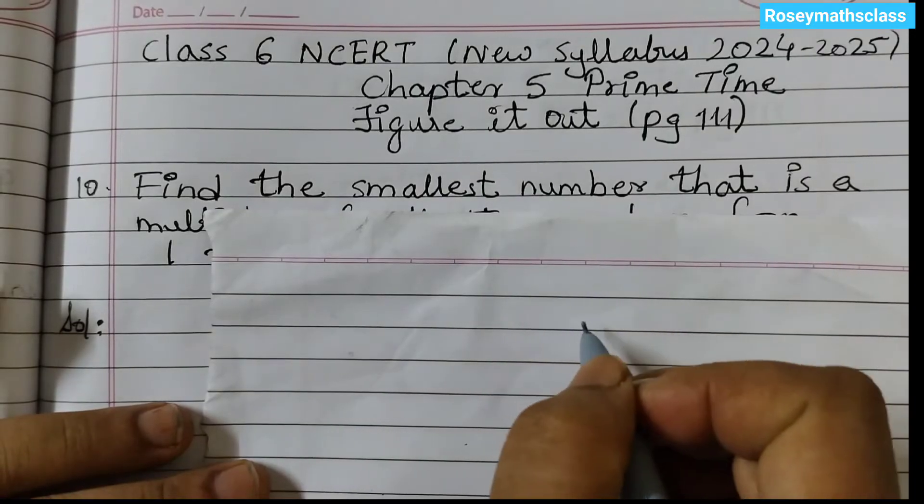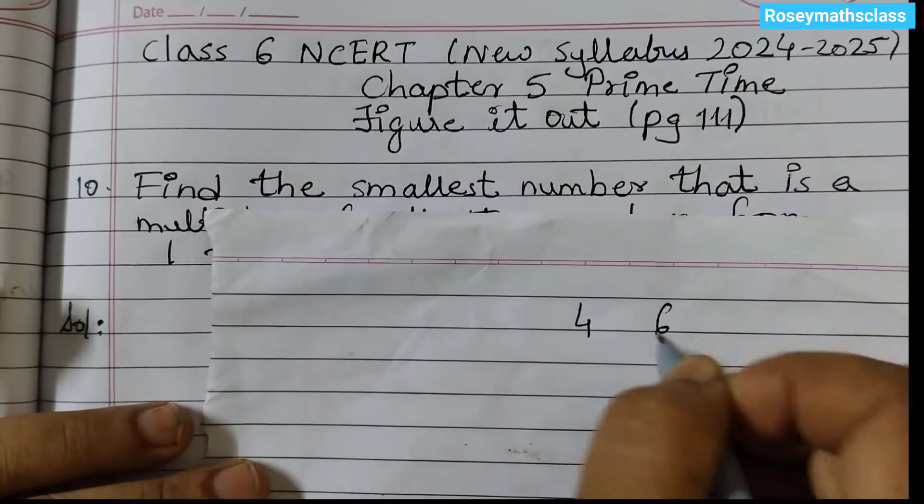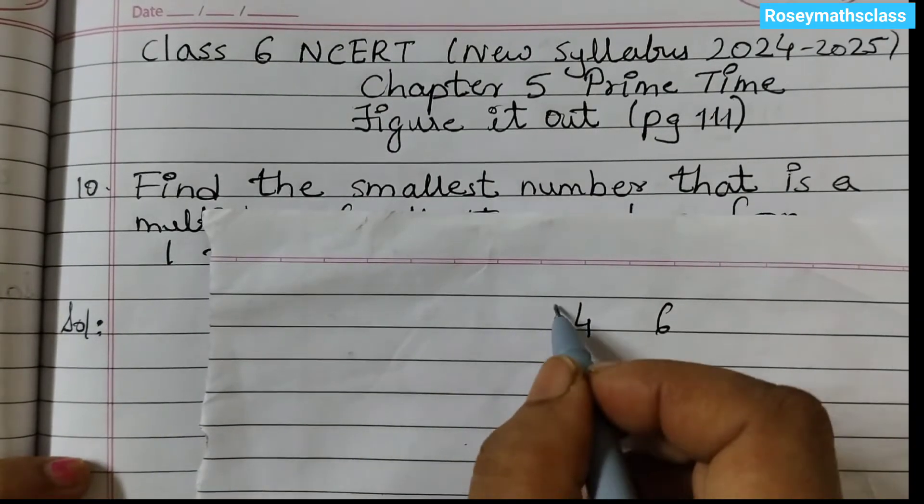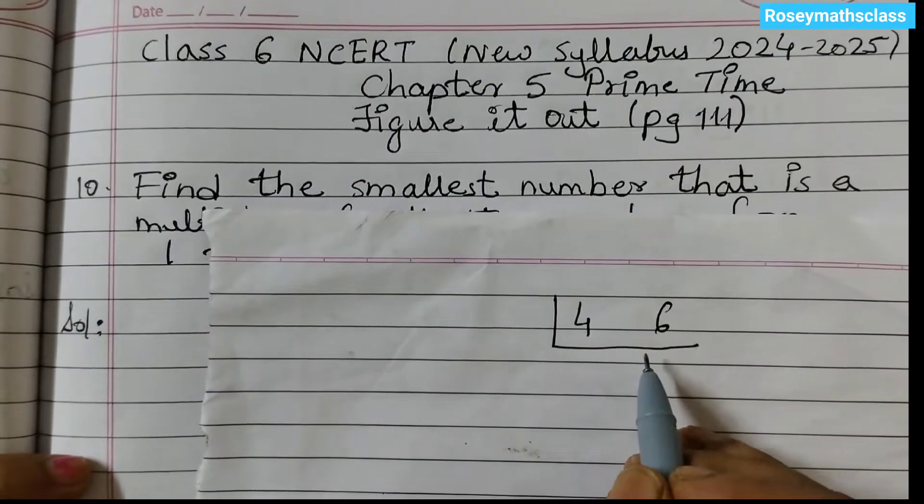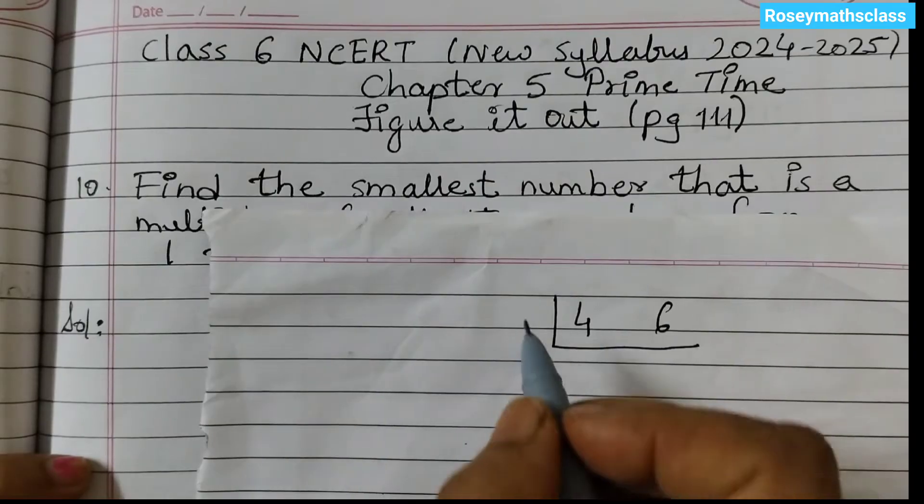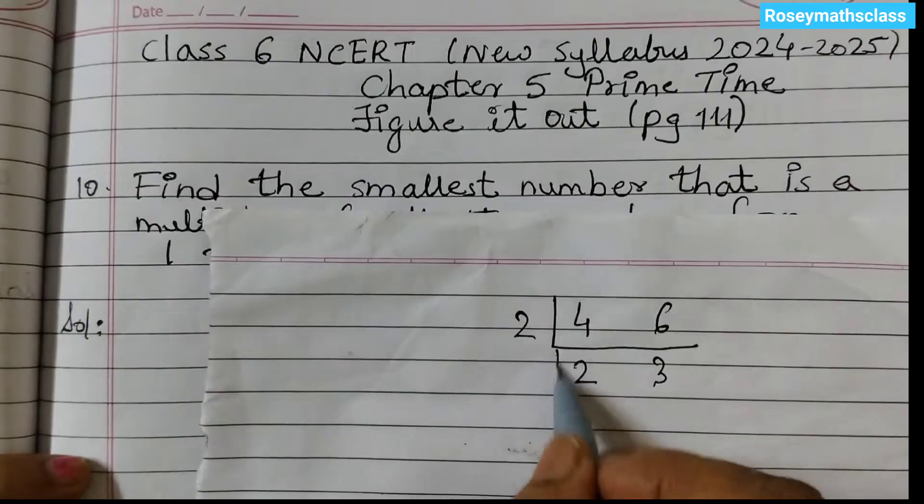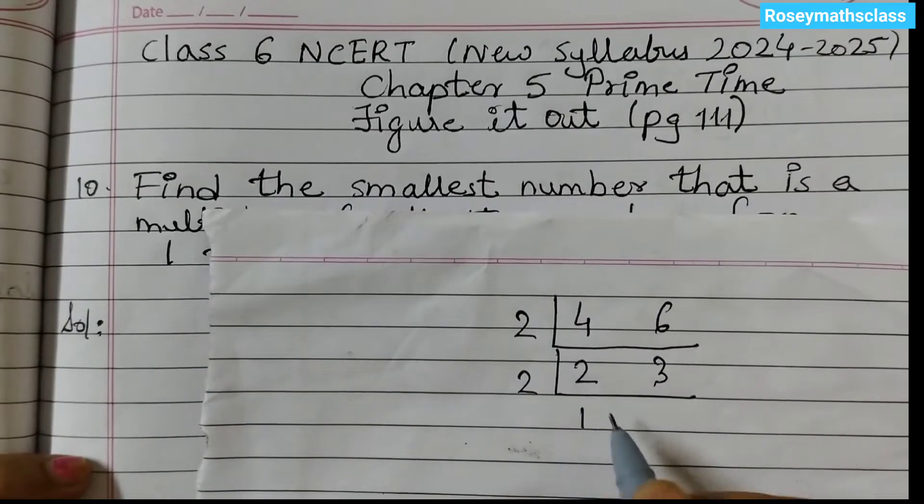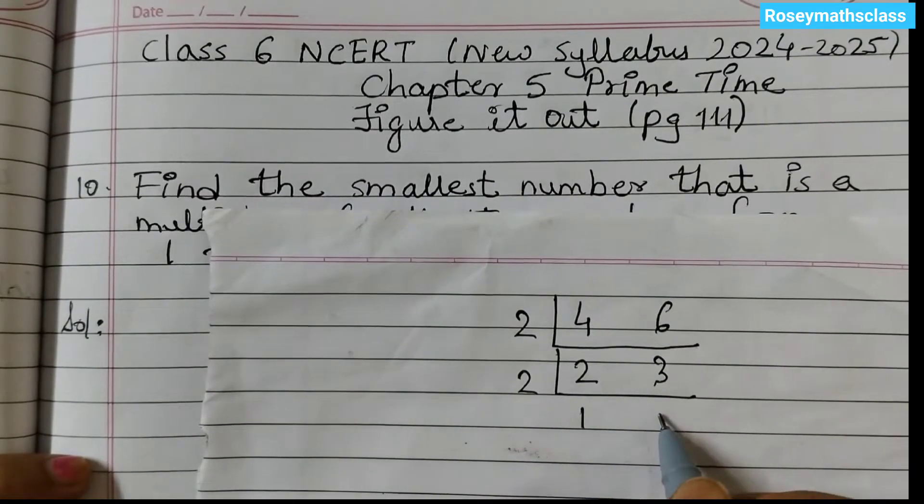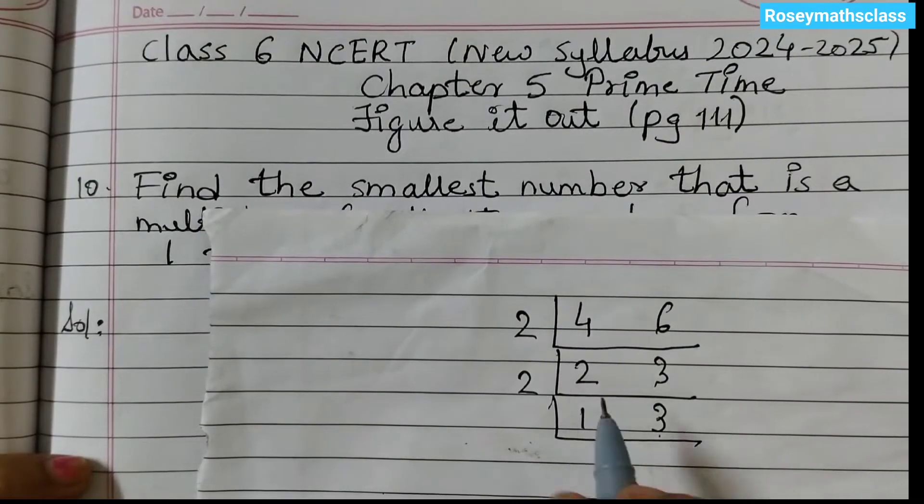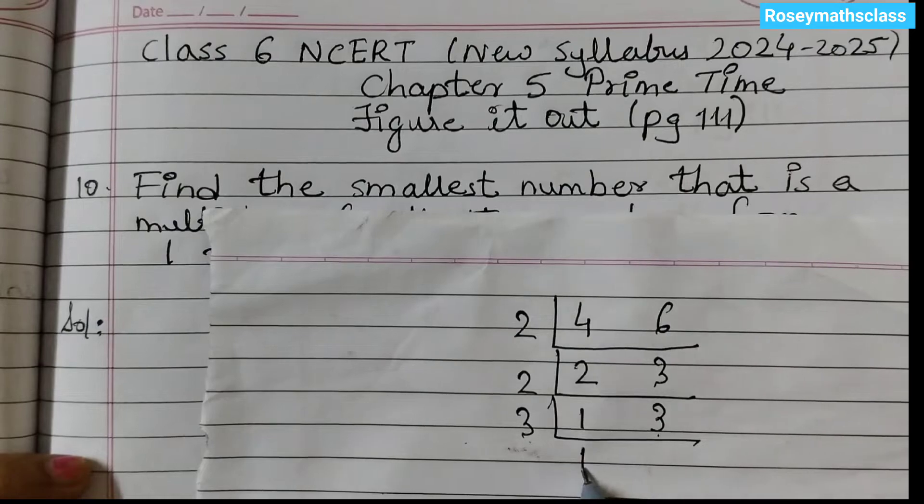For example, if I have two numbers say 4 and 6, find out the least common multiple. We can first arrange it in a row and then start dividing by 2. So 2, 2's are 4, 2, 3's are 6. Again divide by 2, 2 1's are 2, 3 is not a multiple of 2 so it comes down as it is. Now divide by 3, at least one number must be divisible. So 3, 1 comes down as it is, 3 1's are 3.